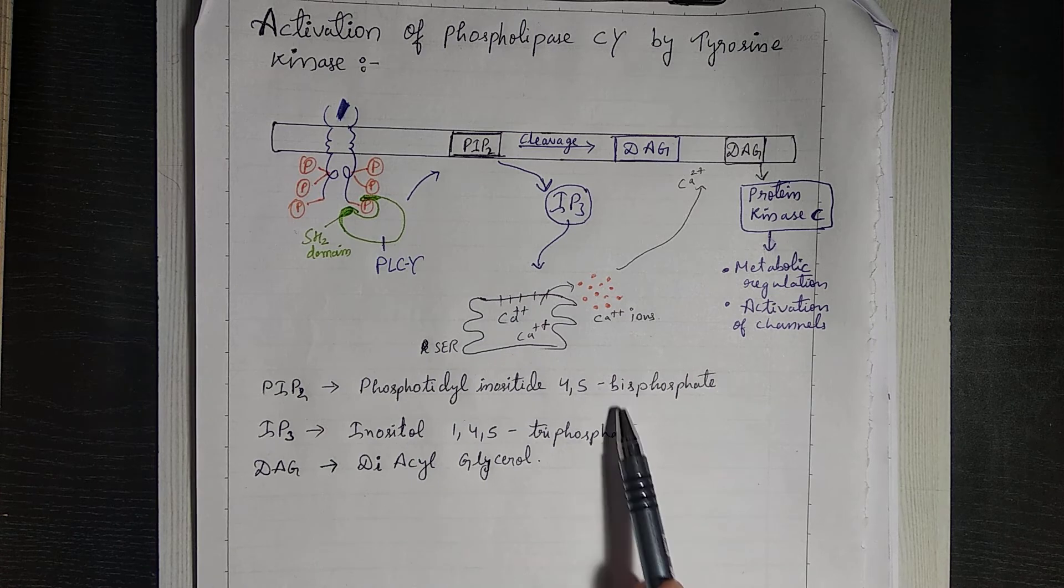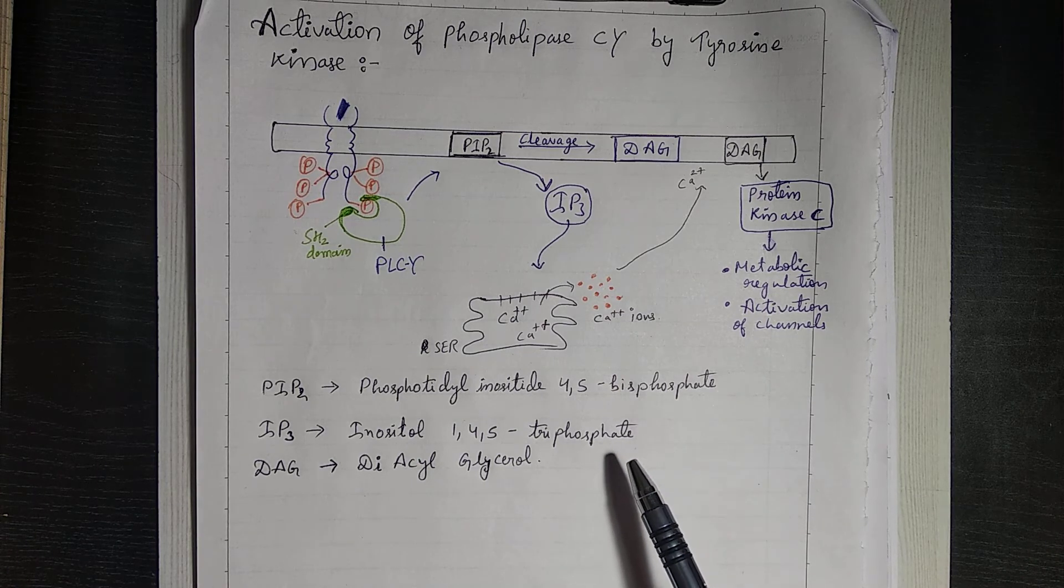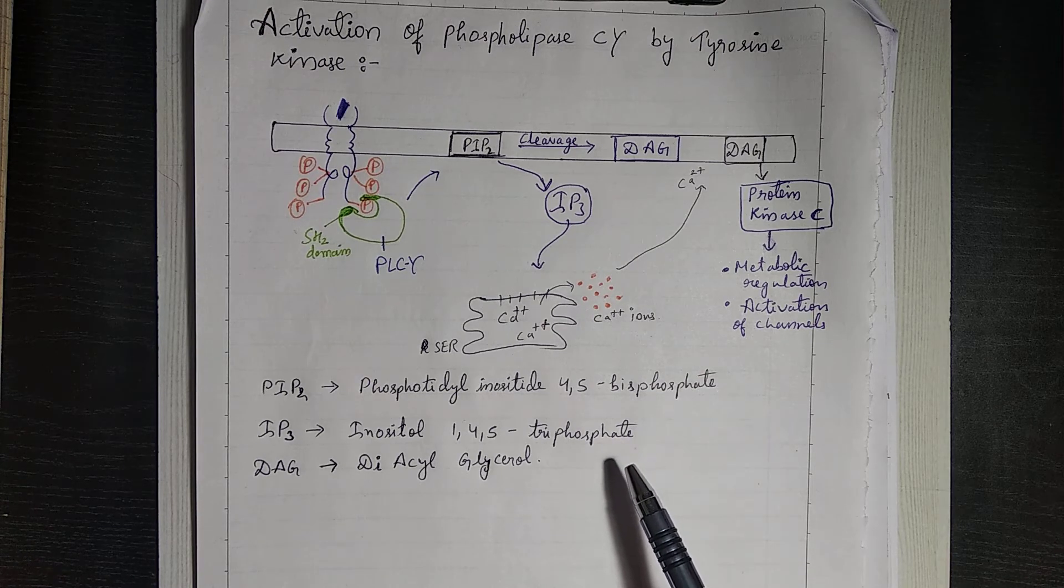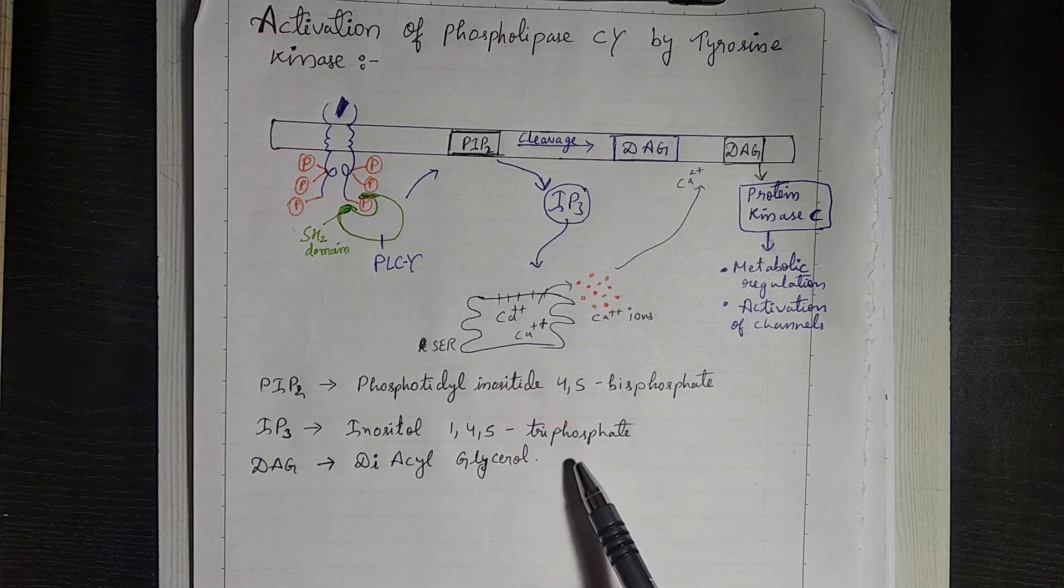So friends, today with this video we have finished the topic of receptor tyrosine kinase. Now there is no other signaling pathway that we had to discuss for CSIR. These were more than enough pathways.